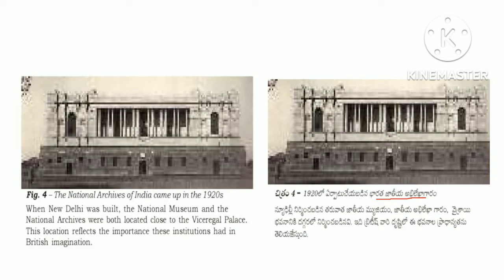When New Delhi was built, the National Museum and the National Archives were both located close to the Viceregal Palace. This location reflects the importance these institutions had in the British imagination.